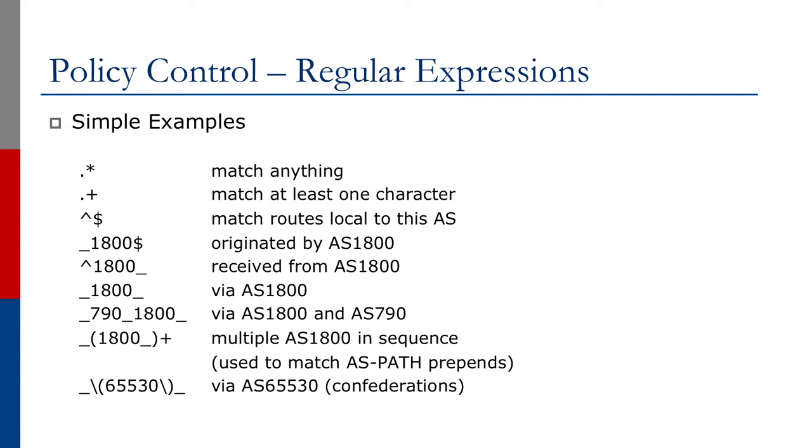Let's look at some examples as you have on the screen. These are examples of how you'd write to match inside Cisco IOS regular expressions. So the dot followed by the star means match anything. Dot followed by a plus means match at least one character. Then the next one, the hat or the caret followed by the dollar sign means match routes local to the AS because there is nothing inside the AS path. It's a null AS path. So these are routes that the autonomous system number is originating.